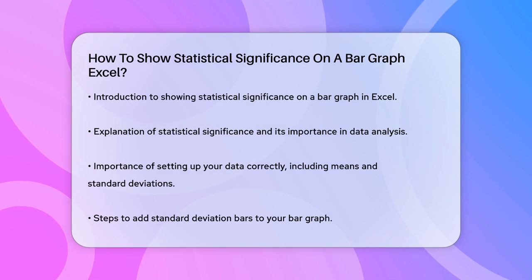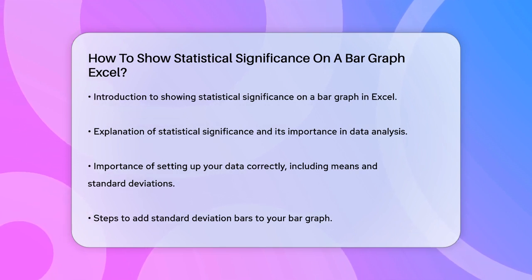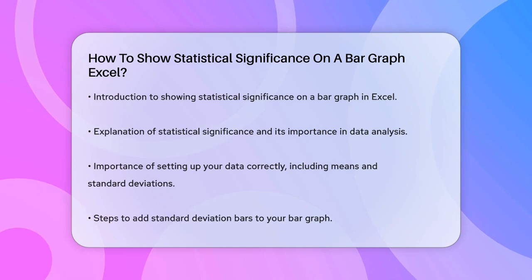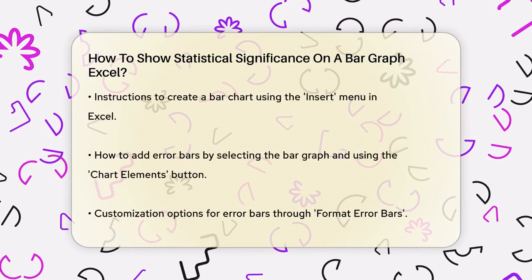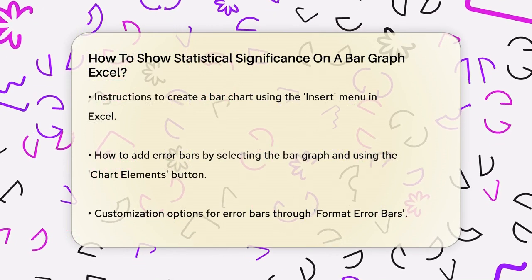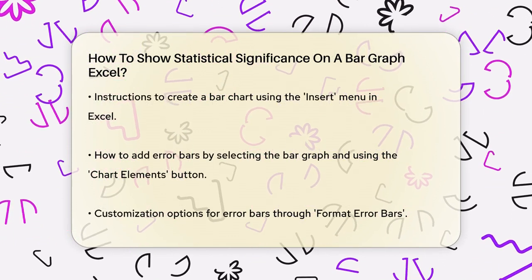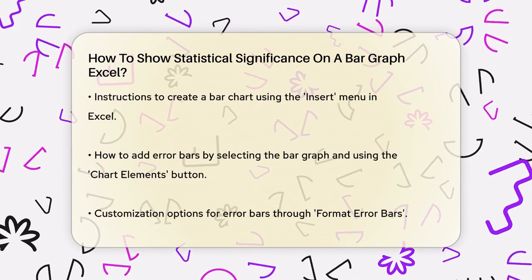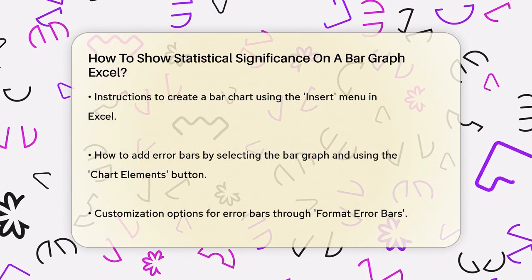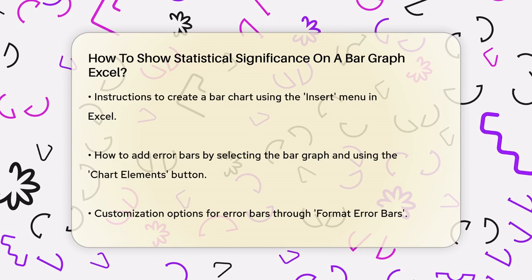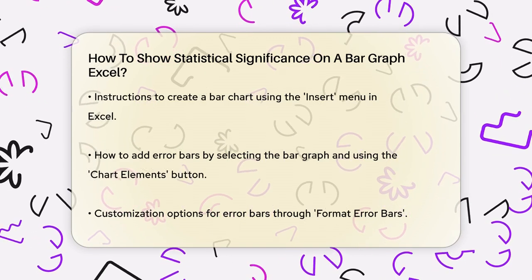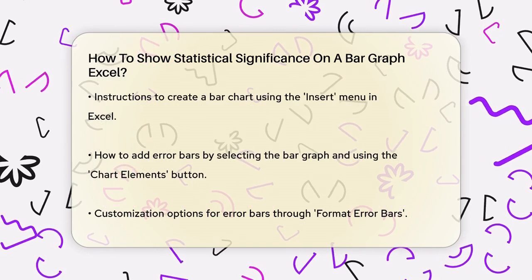Adding Standard Deviation Bars. Before adding significance values, it's helpful to include standard deviation bars. To do this, select your data and go to the Insert menu, then click on Bar Chart and choose the 2D Column Chart. Once your bar graph is created, you can customize it by adding error bars. To add error bars, click on the bar graph, go to the Chart Elements button (the plus sign), and check the box for Error Bars. Choose Standard Deviation as the error bar type.